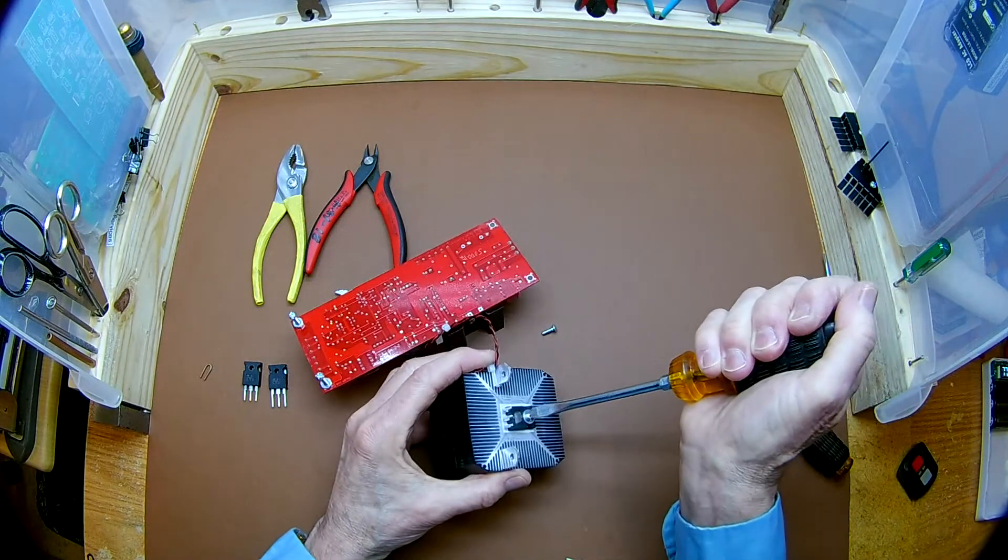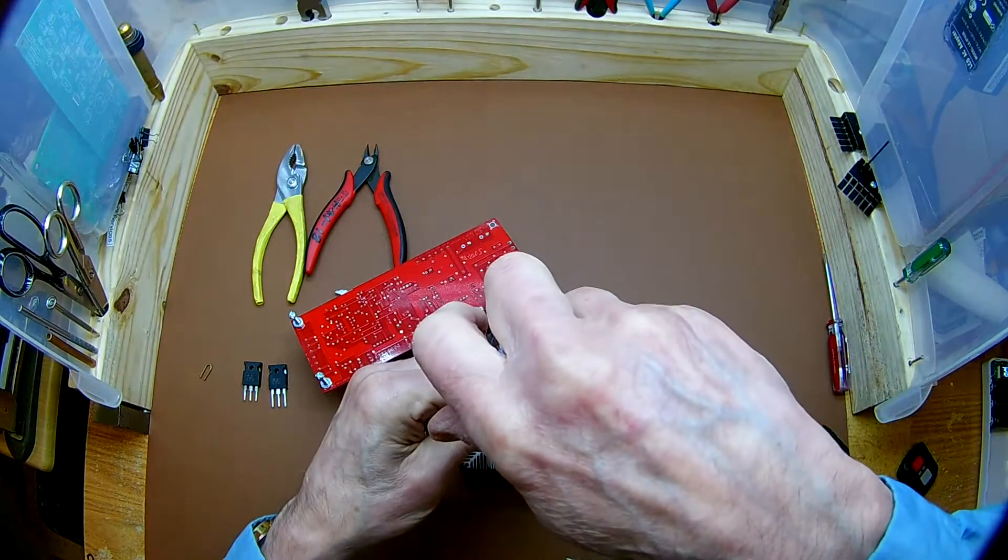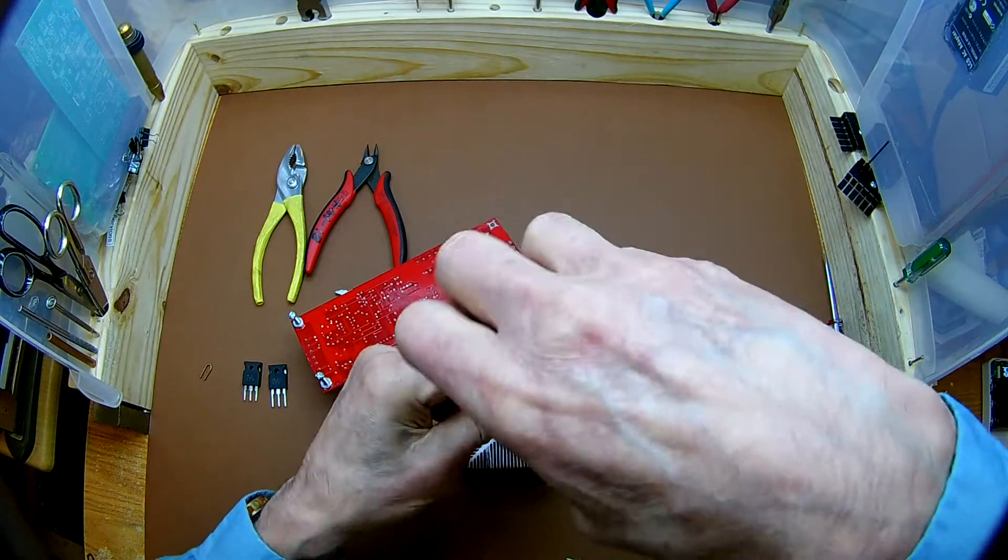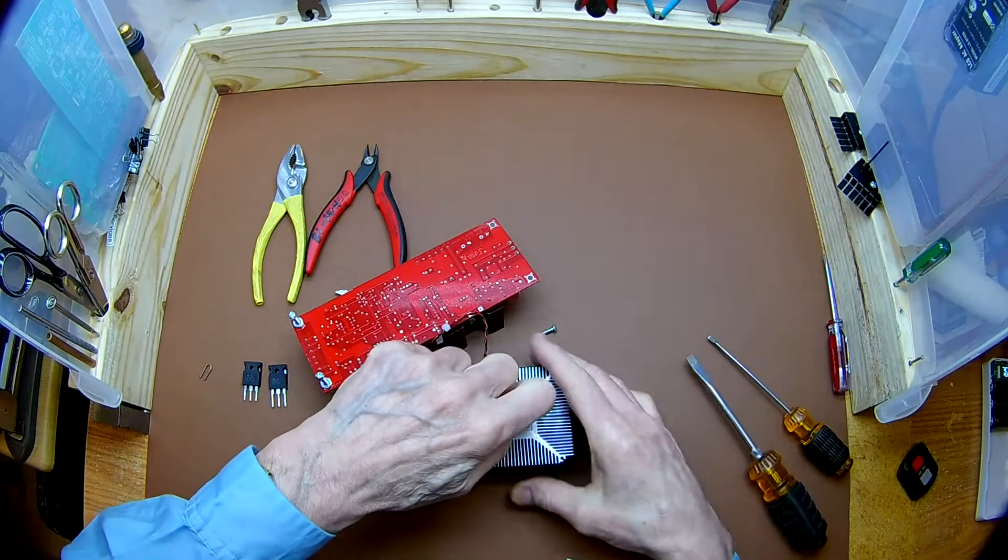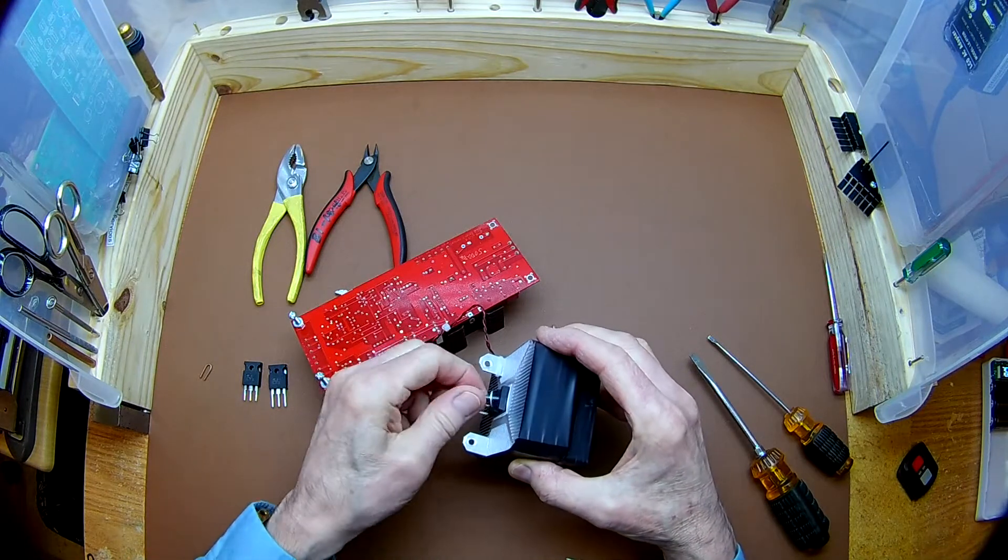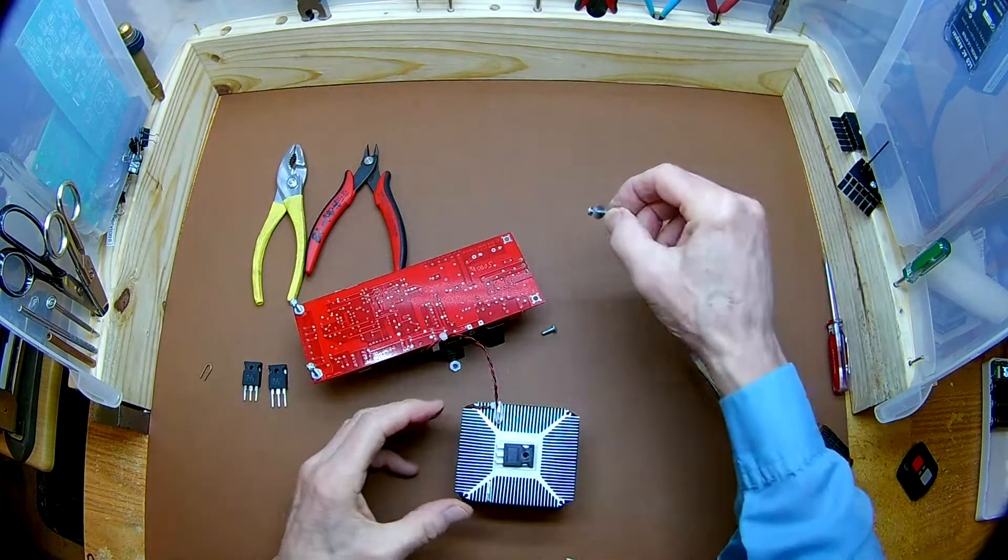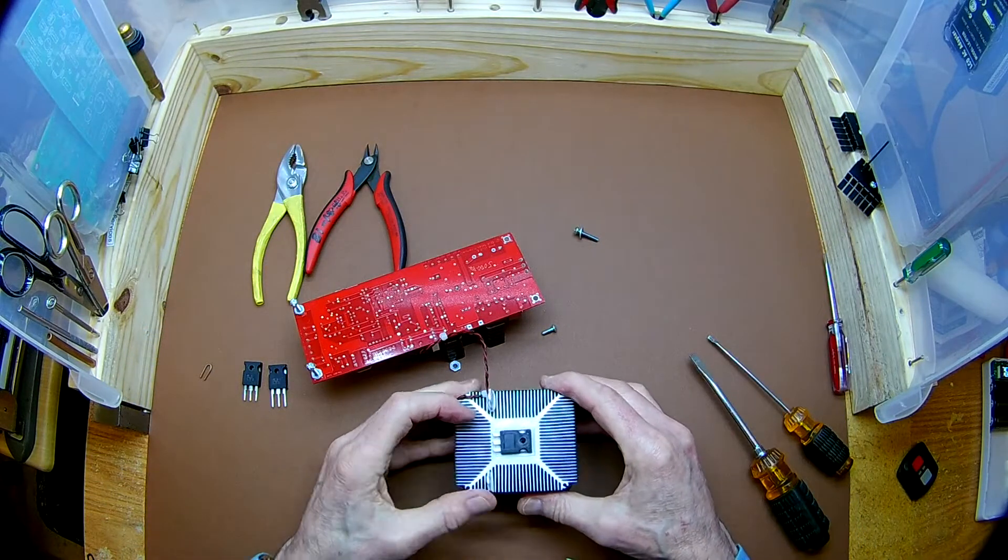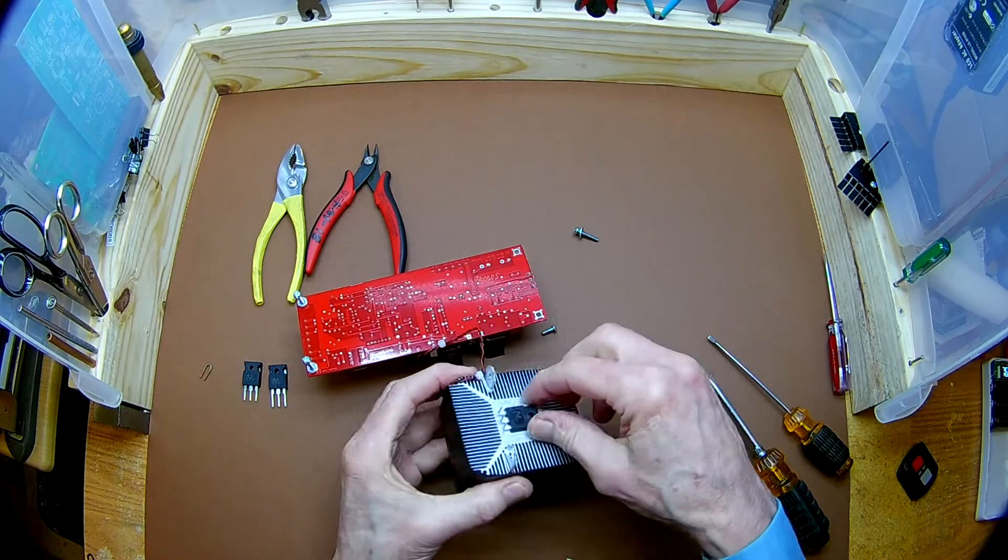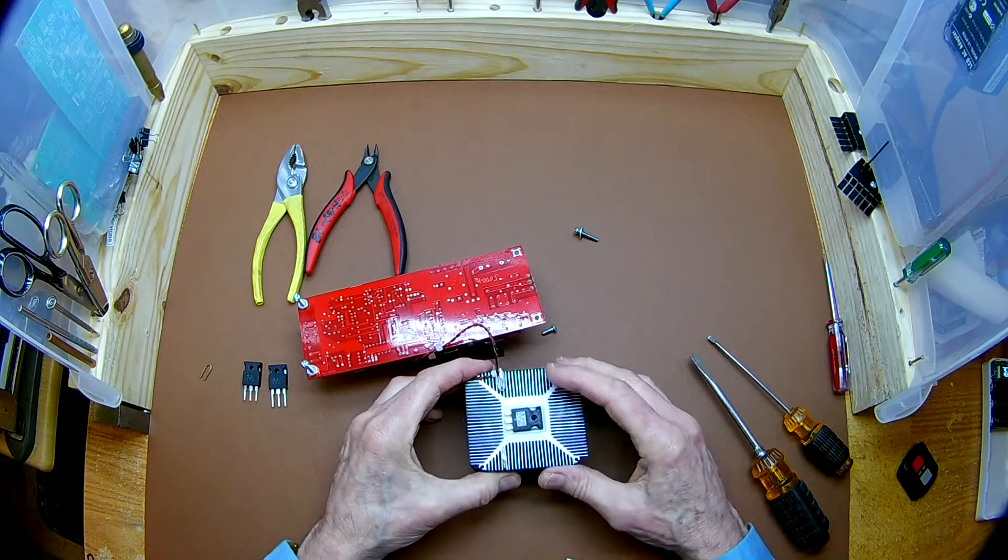So go ahead and put the screwdriver in here. Unscrew the screw. Remove it. It's a long screw; you've got quite a bit of thread to remove. Take it off. Set the screw and the washer aside. Now the transistor is actually stuck to the heat sink, or it's stuck to the thermal pad that's attached to the heat sink.